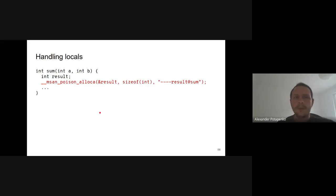For every local variable in an instrumented function, the compiler inserts a call to msan_poison_alloca at function prologue, which marks the memory as uninitialized. The second parameter is the buffer size and the third parameter is a constant string that is later printed in the error report.